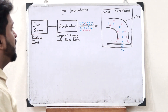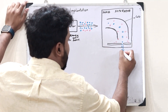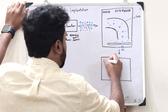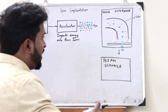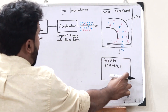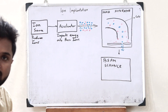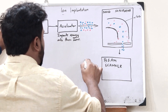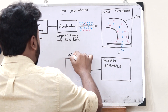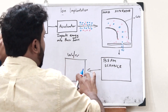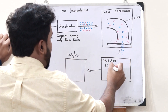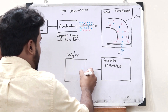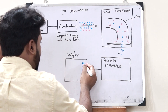Once you obtain this, it is then passed through a particular beam scanner. The beam scanner focuses these particular ions — coming at very high acceleration — onto the wafer that we have. This is now focused onto the wafer, and these particular ions are focused onto this particular wafer by the beam scanner, and we can obtain a desired pattern — whatever desired pattern that we need.